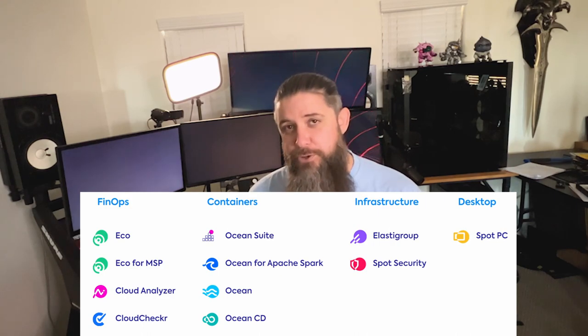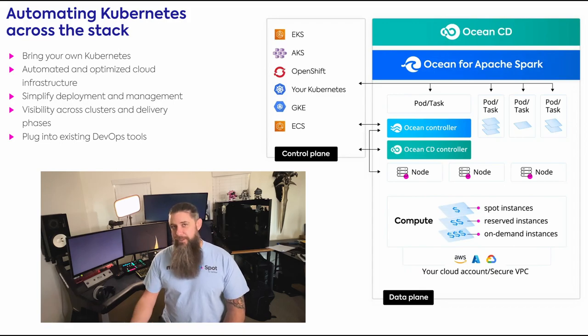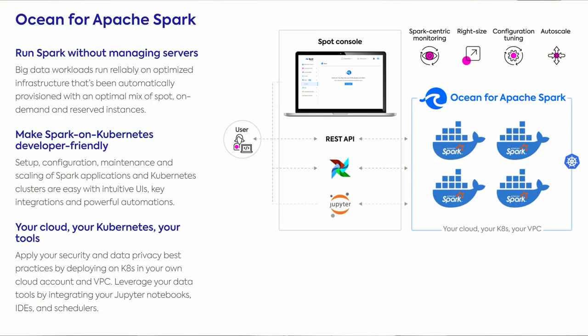In this specific use case, I want to talk about Spot Ocean. The true value of Spot is realized in its ability to automate and even relocate deployments to reserved and spot instances in the cloud. Spot Ocean places an operator into your cluster that analyzes load and communicates with the platform to automate the right-sizing of your cluster nodes, and it does this in an ongoing way in order to truly automate, scale up, and scale out over time. It also does similar work for Spark workloads — Ocean for Apache Spark does deep inspection and auto-tuning on your Jupyter Notebooks. You can even apply your own security and data privacy best practices by deploying in your cloud account in your VPCs.